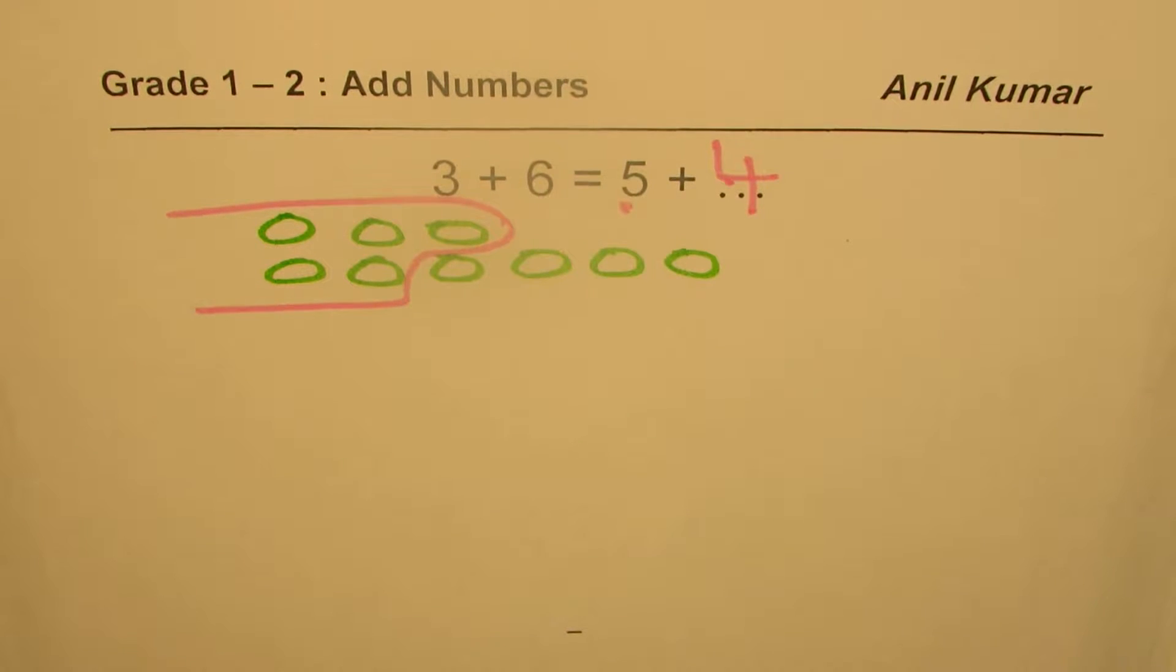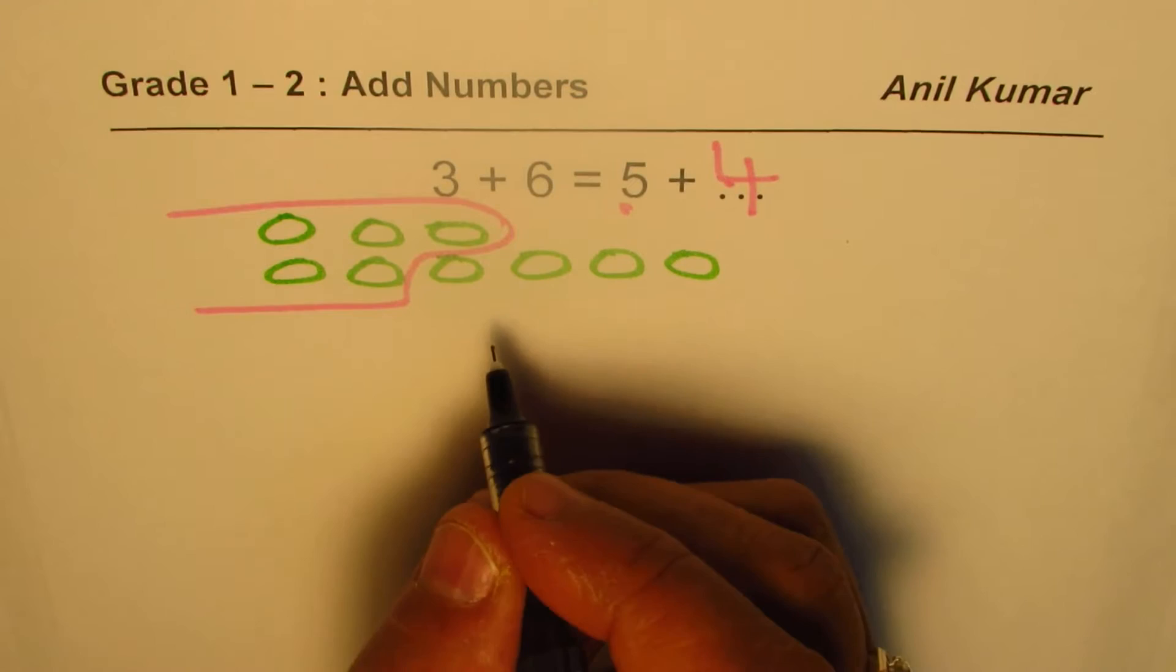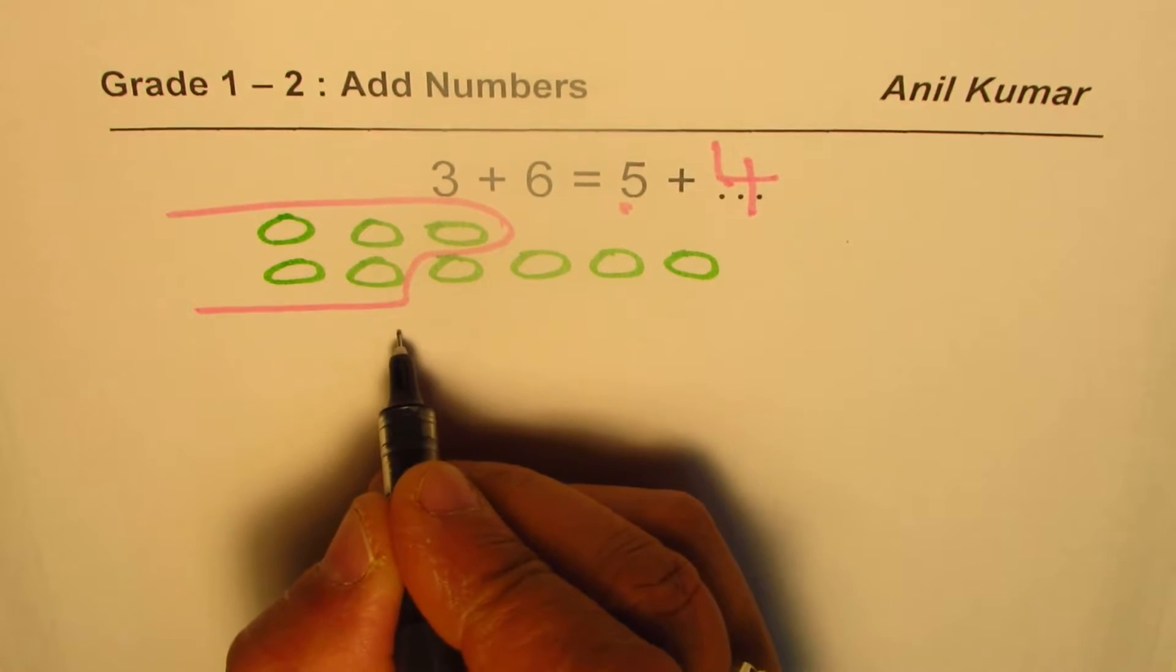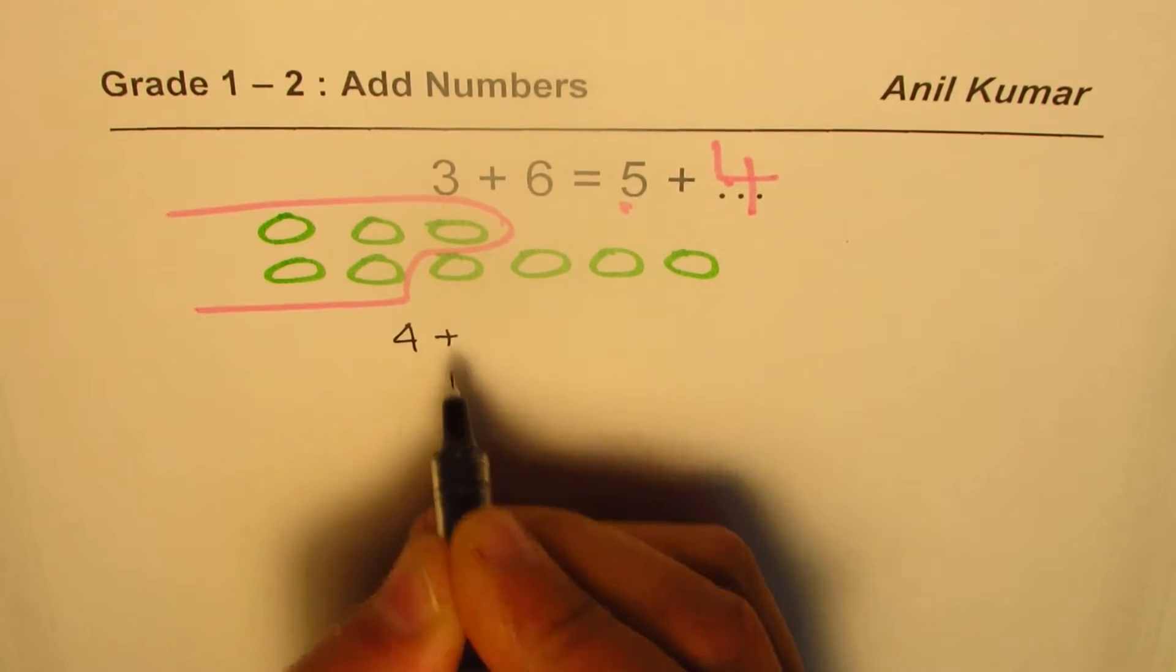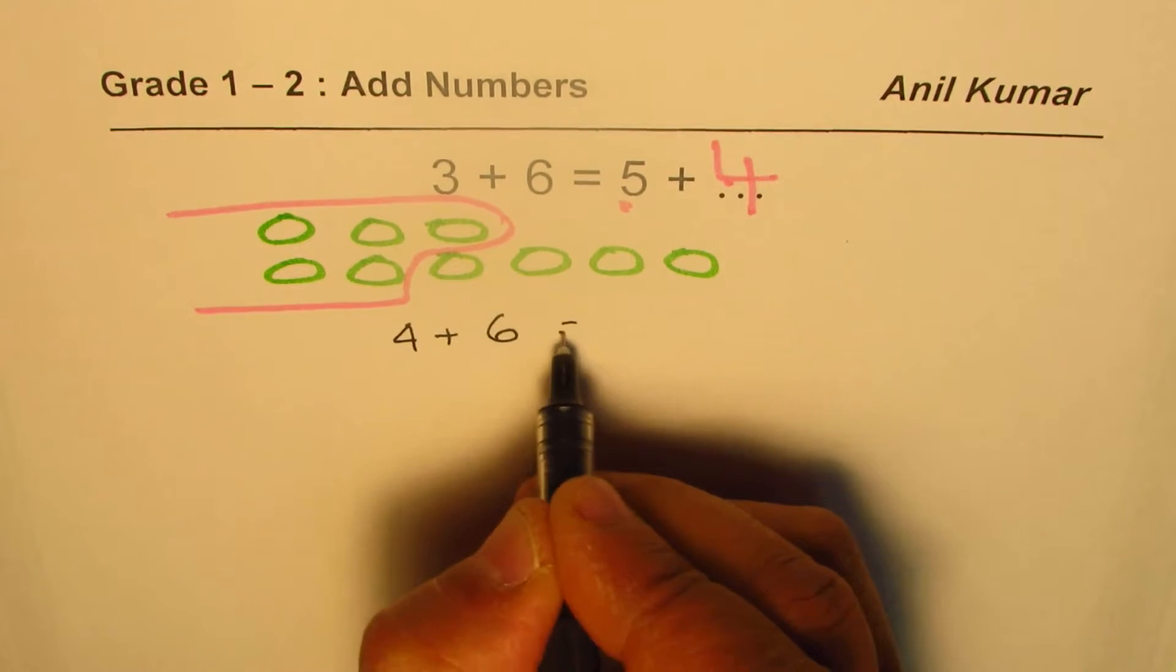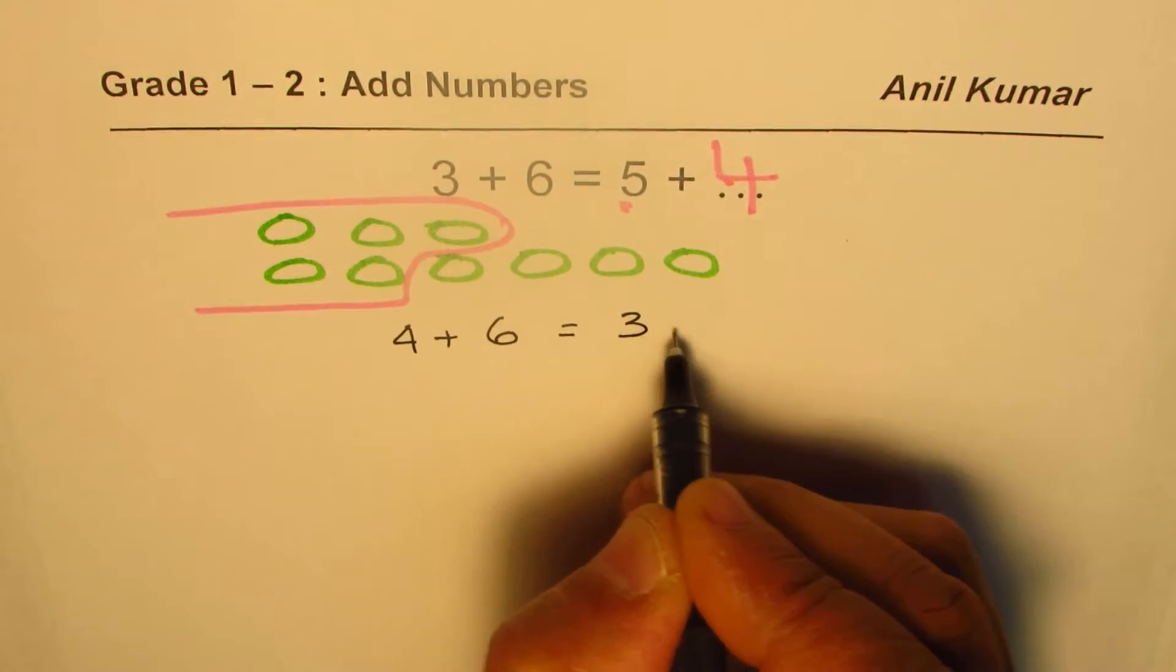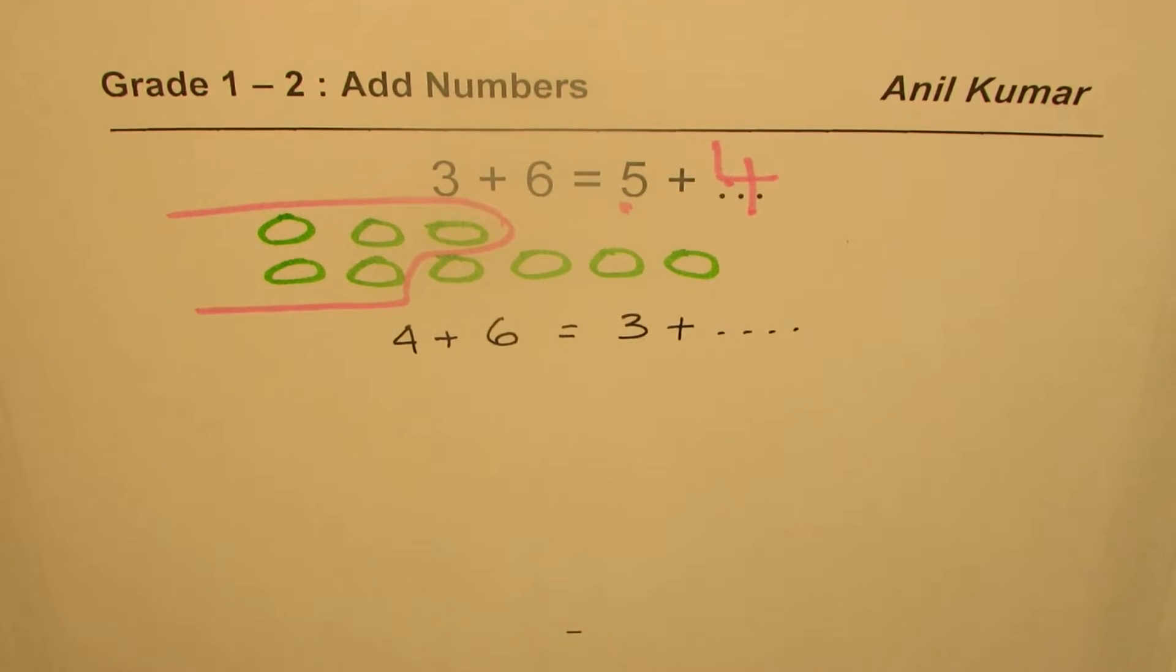Do you get the idea? So that is how it should be done. Let me take another example. This time let's say we write 4 + 6 = 3 + how many. Okay, let's change the question a bit.